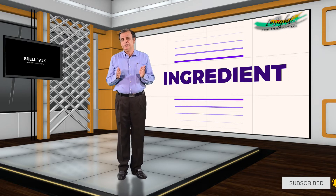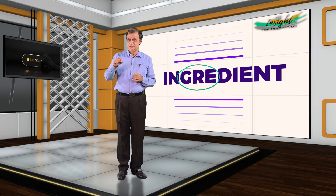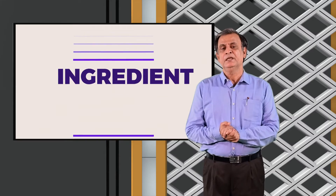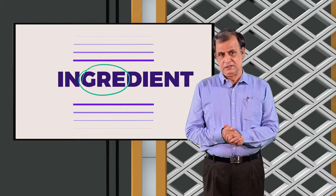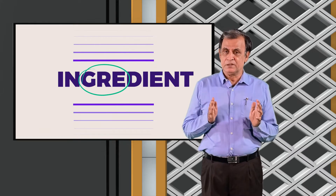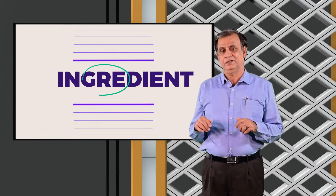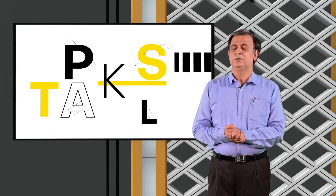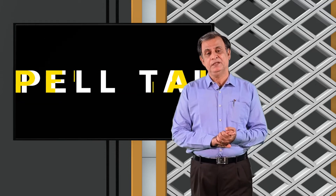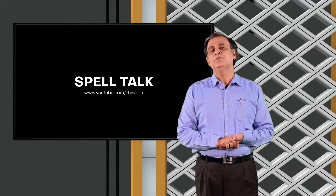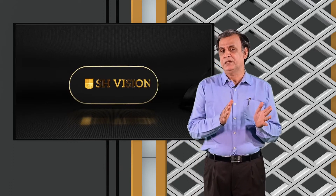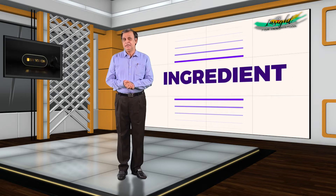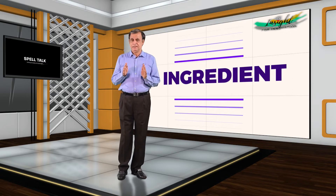The tricky area in the word is G-R-E. That is the tricky area as far as spelling is concerned. The pronunciation is 'ingredient', not 'ingredient' as some people say. We will see the spelling once more: I-N-G-R-E-D-I-E-N-T — ingredient.